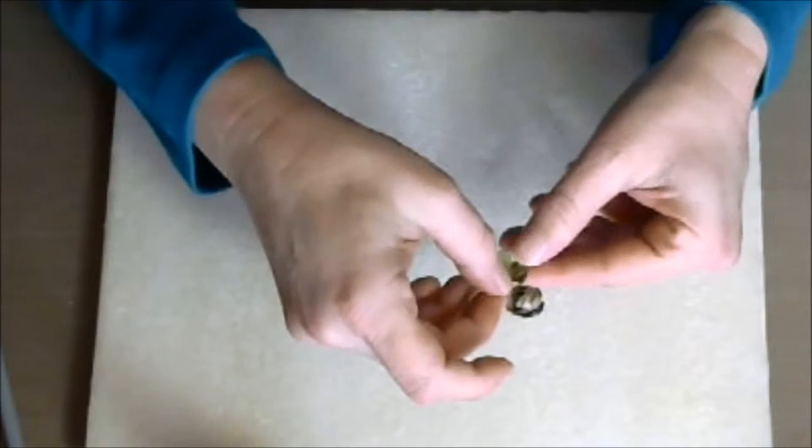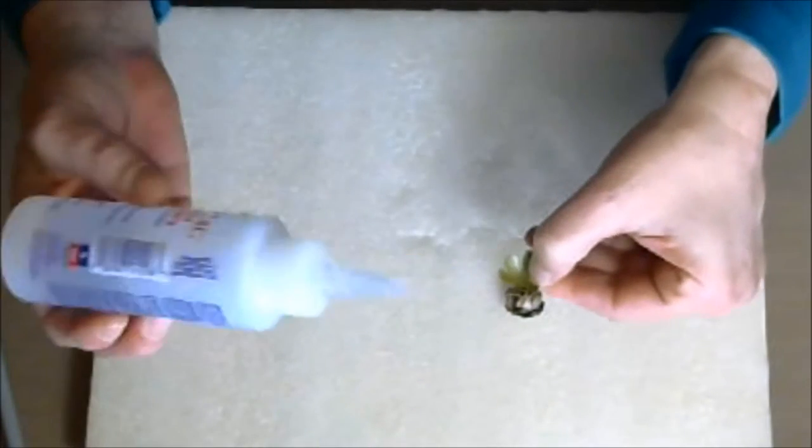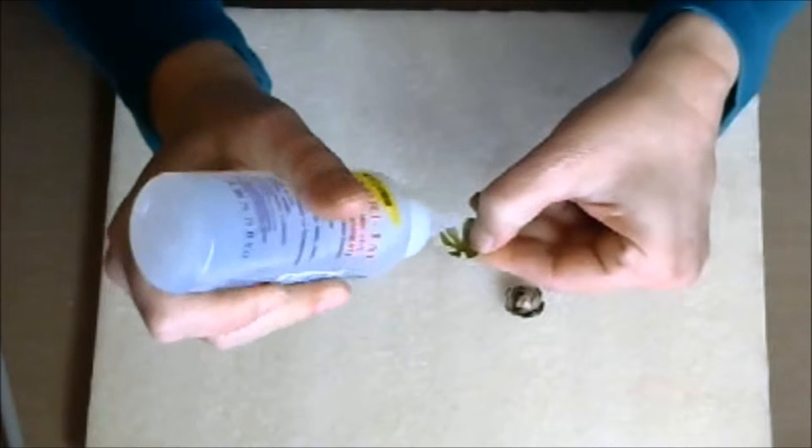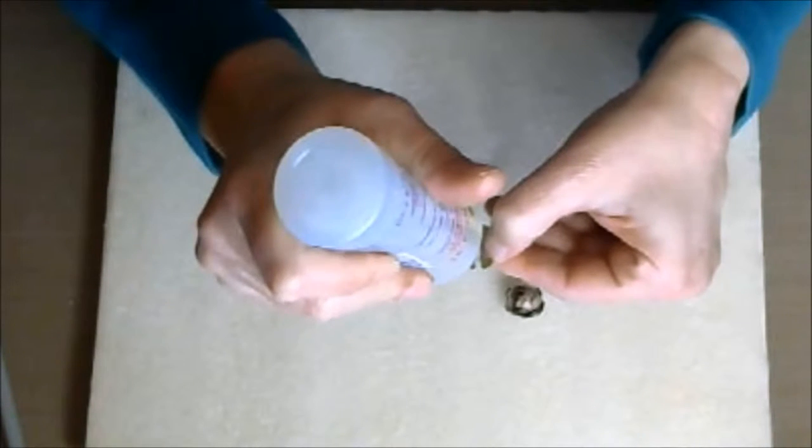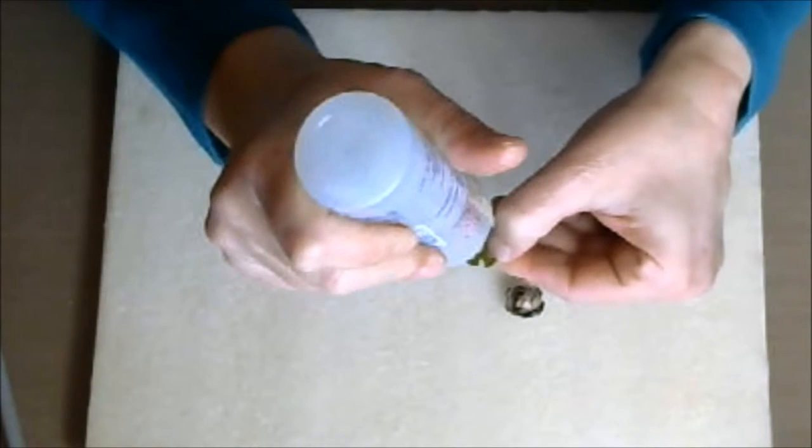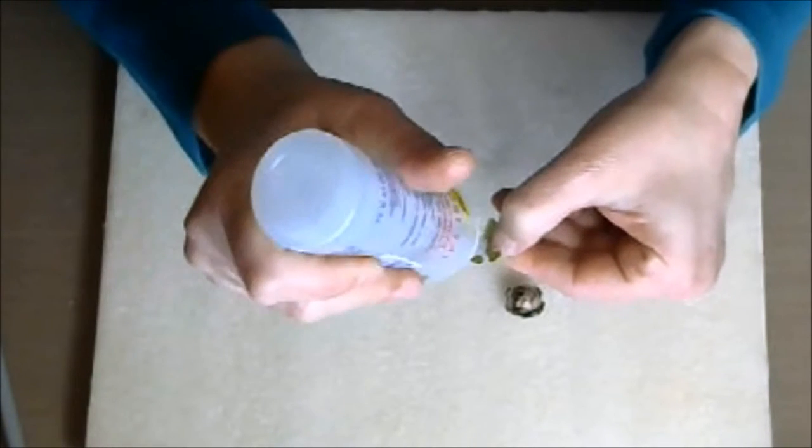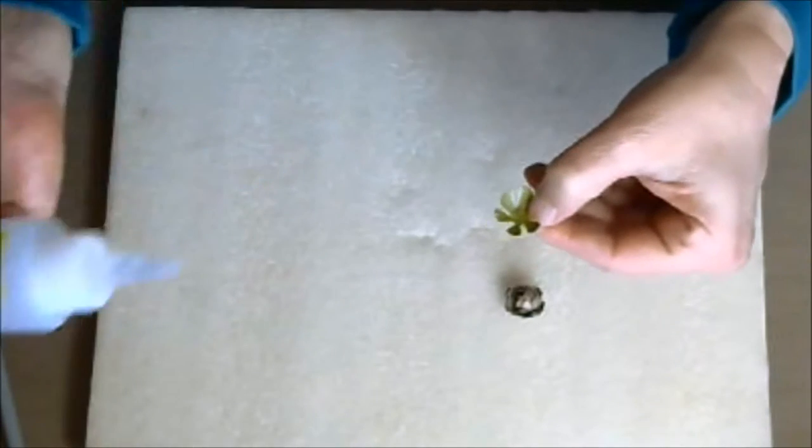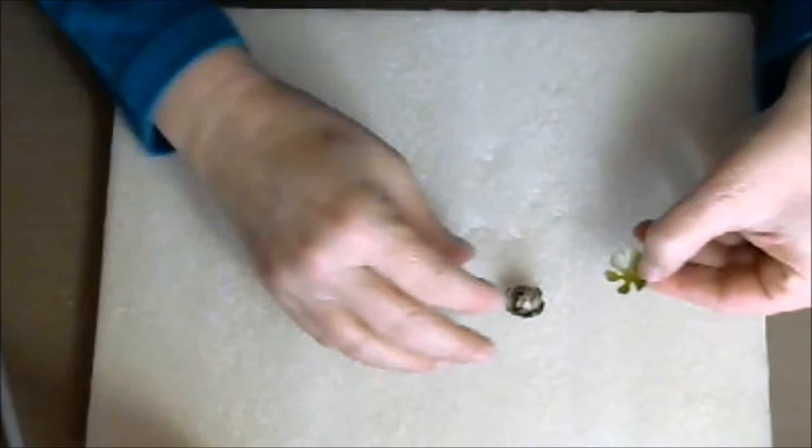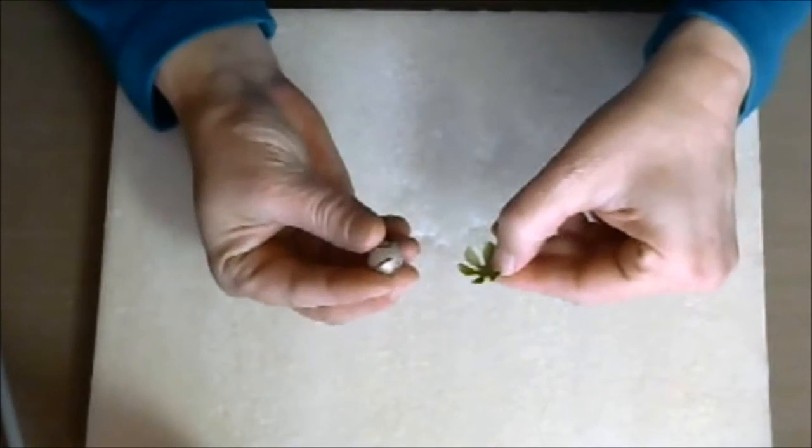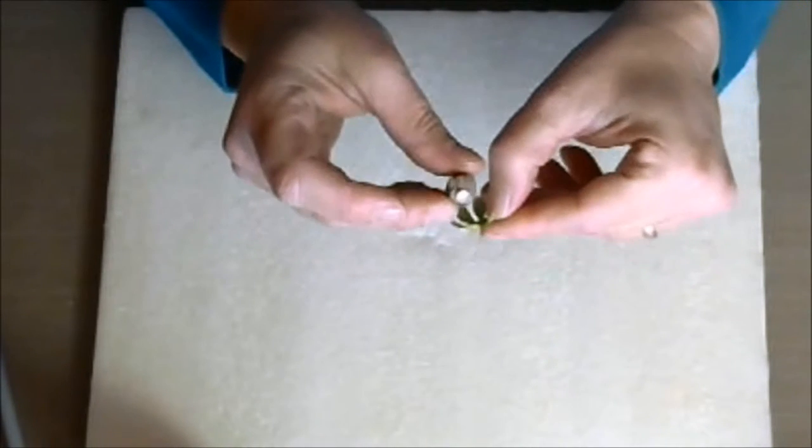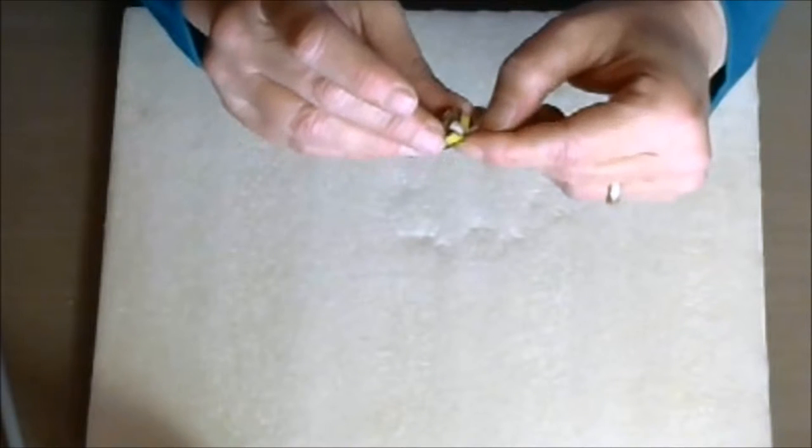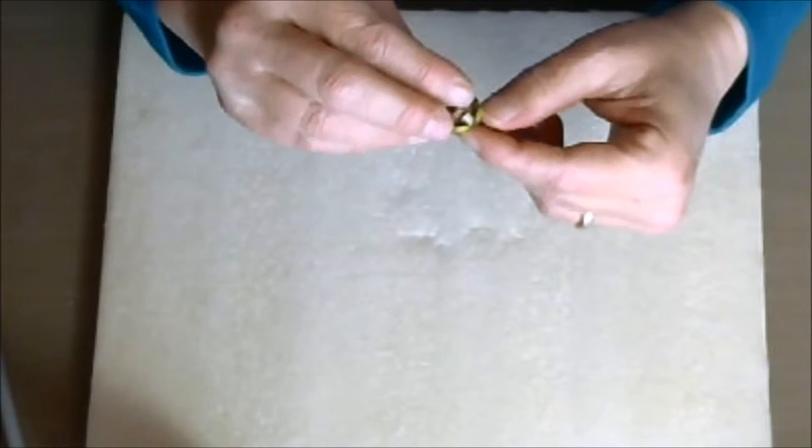Now we're going to make our bottom. I'm going to put the glue on the inside of this bottom here. Got some glue stuck on the top of my glue bottle here.